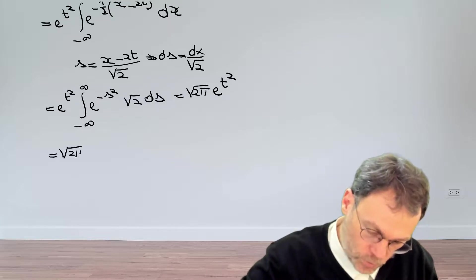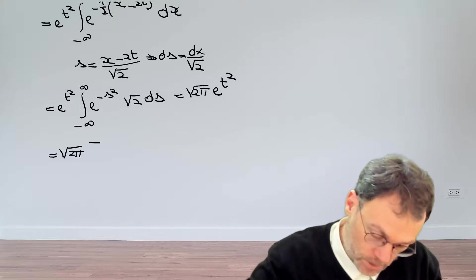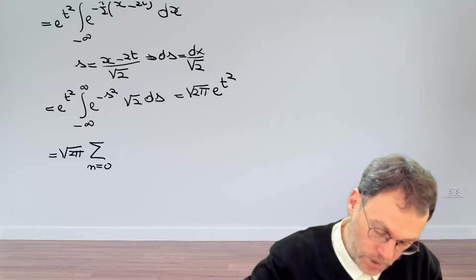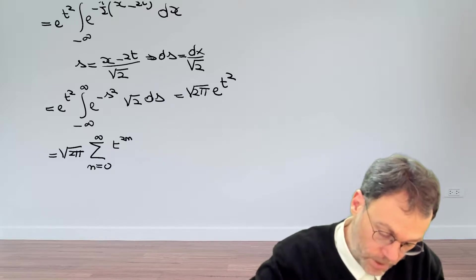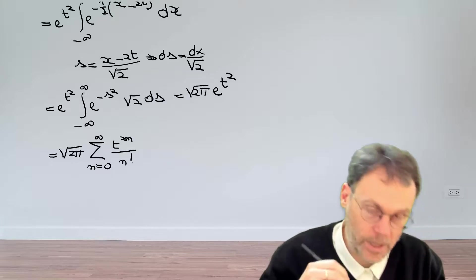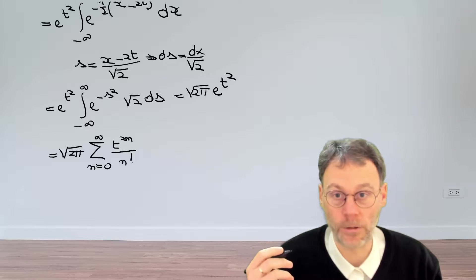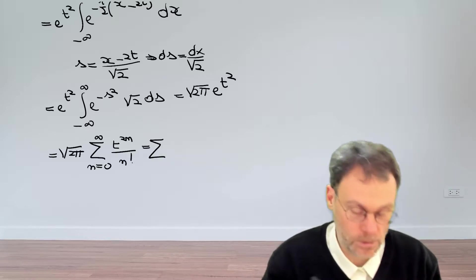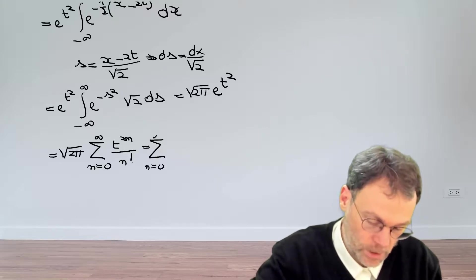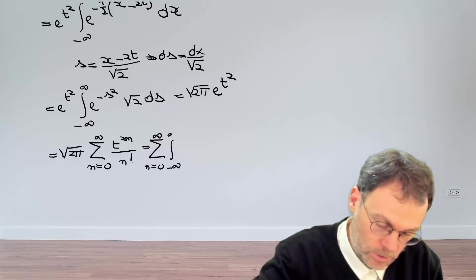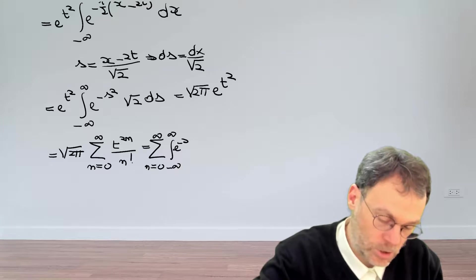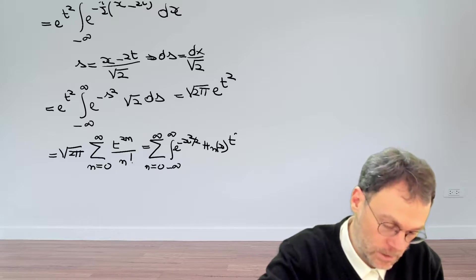Square root of 2 pi and then exponential t squared, giving us a summation n going from 0 to infinity. The argument to the power of n. So that becomes t squared to the power of n, so t to the 2n divided by n factorial. And then let me just copy what we had for the right hand side. So where we expand our generating function in terms of Hermite polynomials, integral minus infinity to plus infinity exponential minus x squared over 2 h_n x t to the power of n divided by n factorial dx.